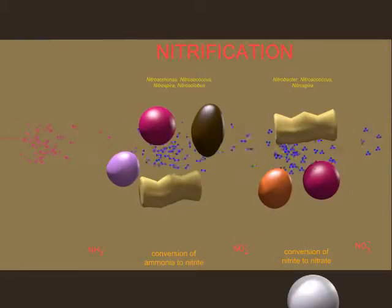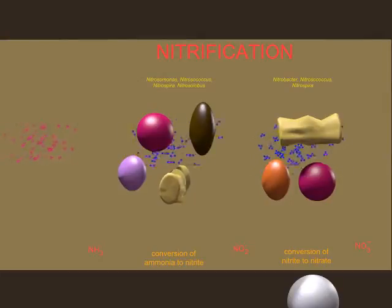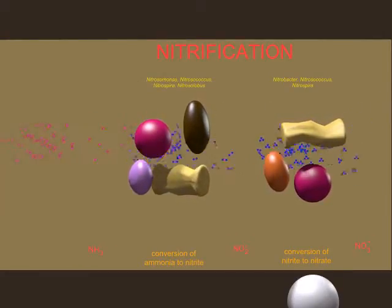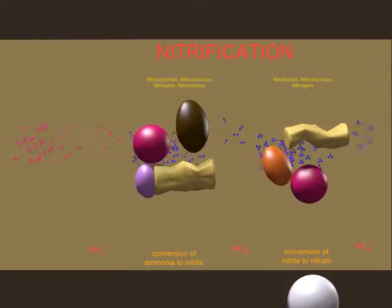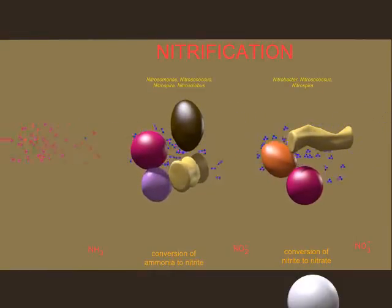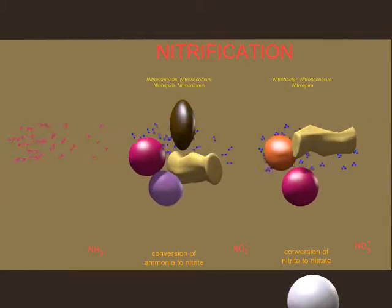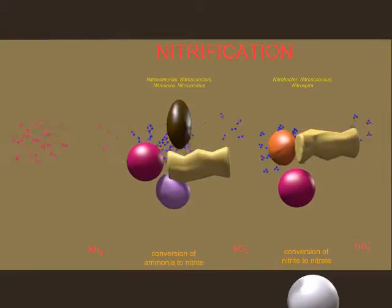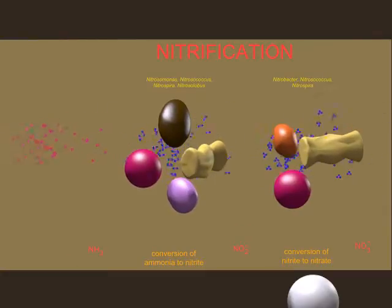Before nitrogen can be taken up by most living things, ammonia must be converted to nitrates through a process known as nitrification. A number of bacteria can convert ammonia to nitrites (NO₂⁻ ions), such as Nitrosomonas, Nitrosococcus, Nitrospina, and Nitrosolobus. And then other bacteria can convert nitrites into nitrates (NO₃⁻), such as Nitrobacter, Nitrospina, and Nitrococcus.